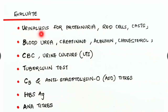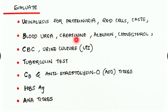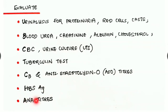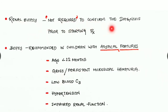For evaluation, perform urinalysis for proteinuria, red cells, and casts. Check blood urea, creatinine, albumin, and cholesterol levels; do a complete blood count and urine culture if UTI is suspected. Perform a tuberculin test as tuberculosis commonly affects the kidney. Check C3 and anti-streptolysin O (ASO) titers, hepatitis B surface antigen, and ANA titers. Renal biopsy is not required to confirm diagnosis prior to starting therapy — with clinical features alone we can start prednisolone or other corticosteroids.